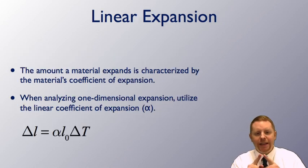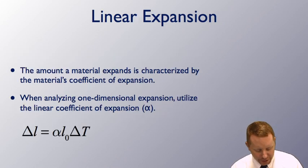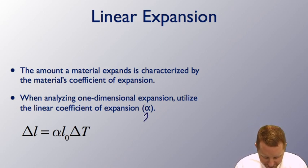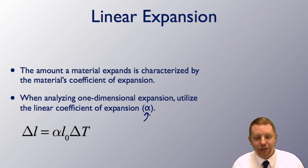When we talk about linear expansion, an object expanding in one dimension, the amount that it expands as a function of temperature is characterized by its linear coefficient of expansion. When we analyze this, we're going to refer to that as alpha, and you would look this up for a specific material. The change in an object's length is equal to its linear coefficient of expansion, alpha, times its initial length, times the change in temperature. That change in temperature can be either in Kelvins or degrees Celsius because they have the same magnitude of a change.